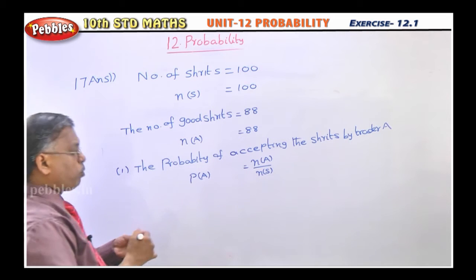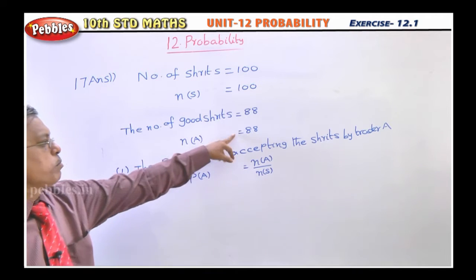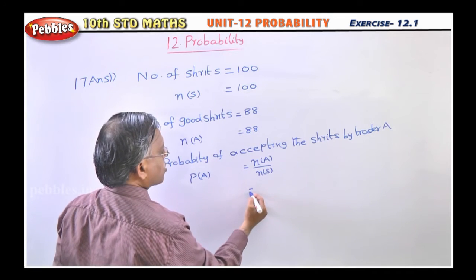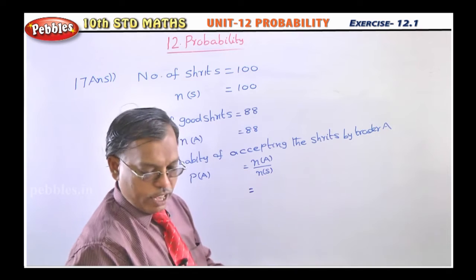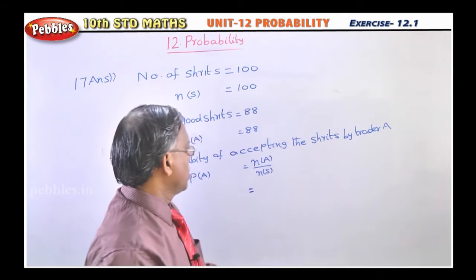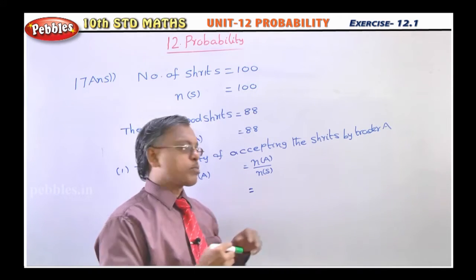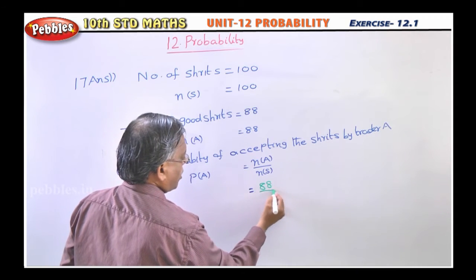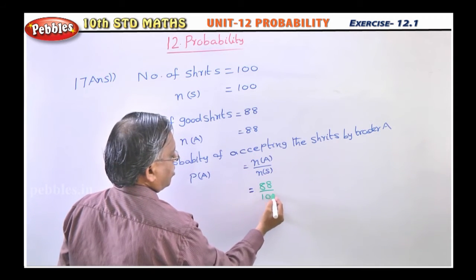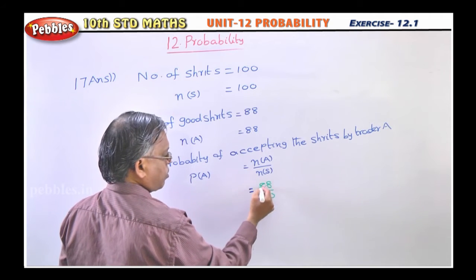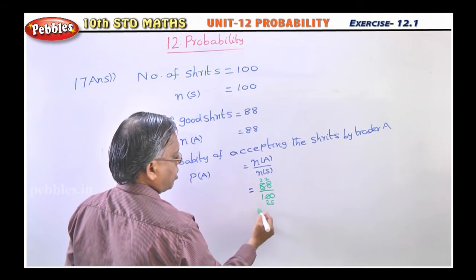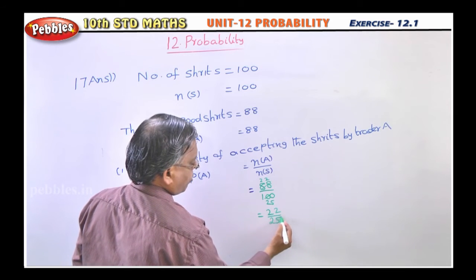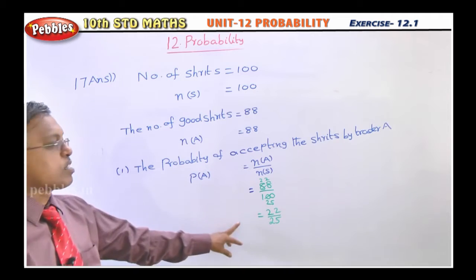The probability of accepting the shirts by trader A is given as P(A), which is n(A) divided by n(S). Now both values are known: n(A) is 88 and n(S) is 100. Substituting: P(A) = 88/100. Using the 4 times table, cancel to get 22/25. So that is your first answer.